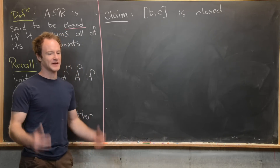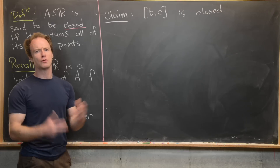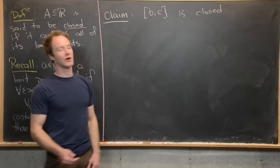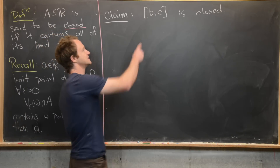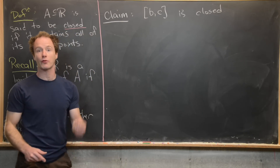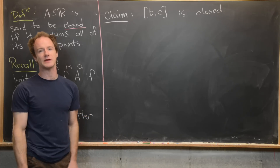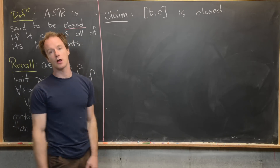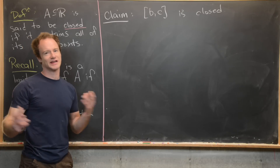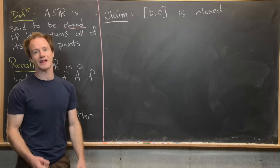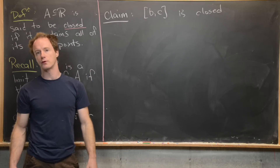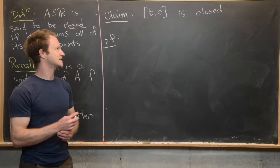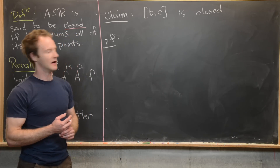Generally we want our careful definitions in mathematics to work alongside our intuition. From calculus you will have learned about closed intervals: the interval [B,C] is all real numbers between B and C, including B and C. A closed interval should most definitely be a closed set — otherwise our intuition isn't working very well. That's what we'll prove in this first claim. We'll do this by proving that every element of [B,C] is a limit point of [B,C].